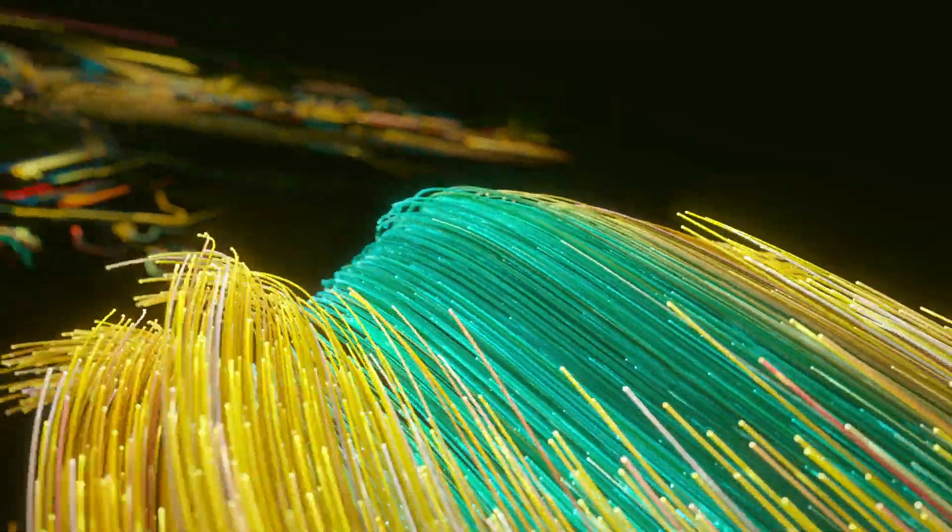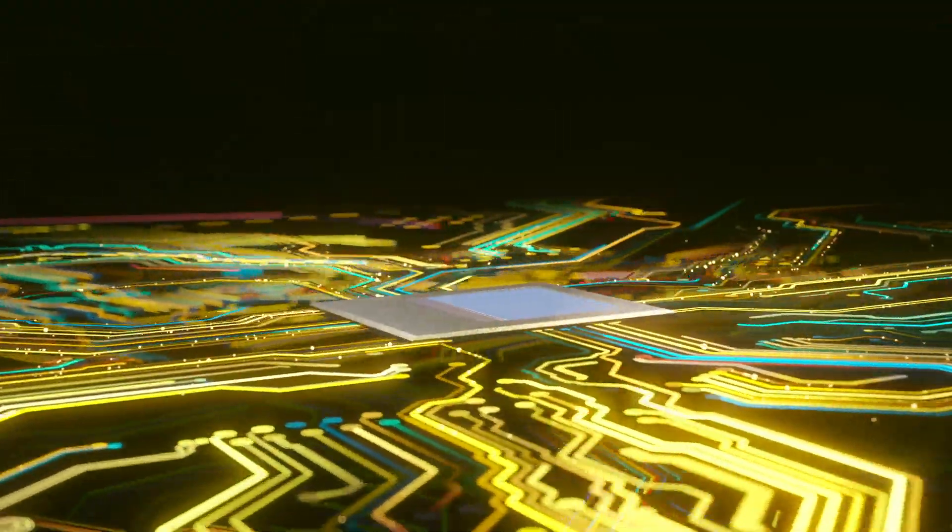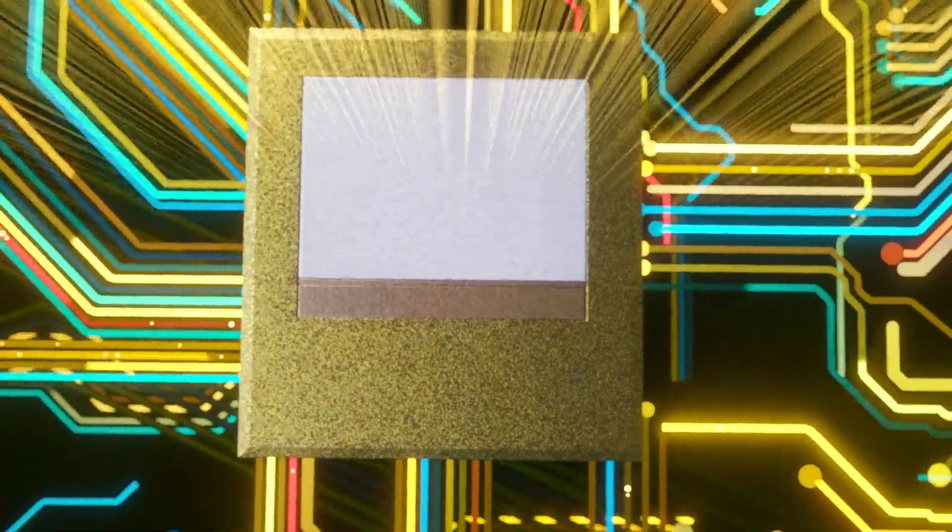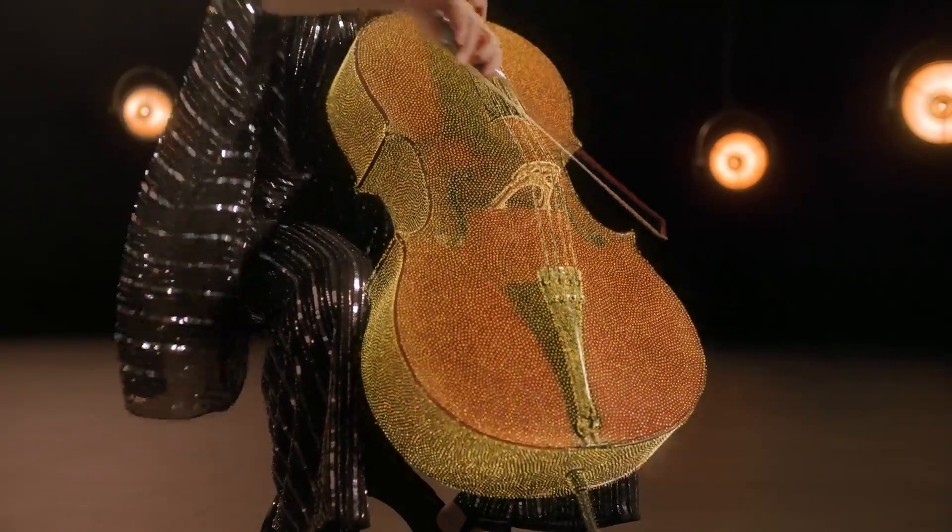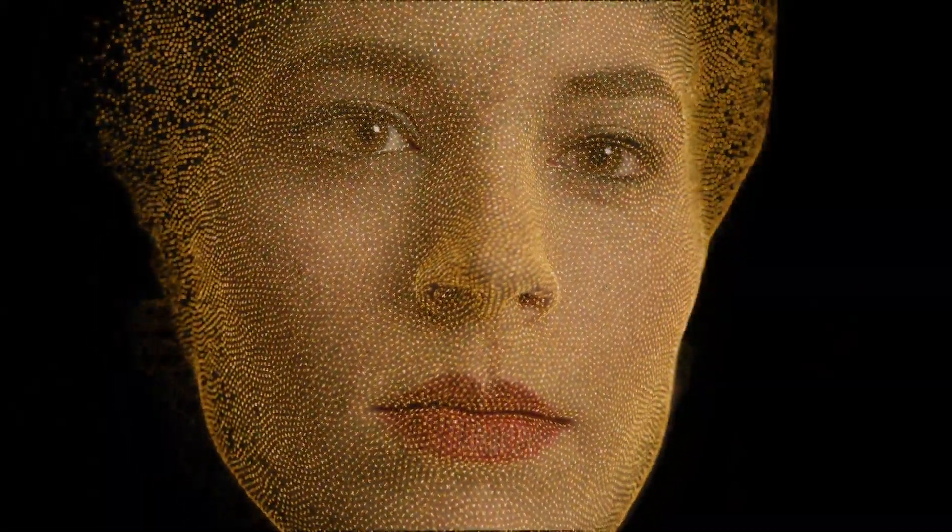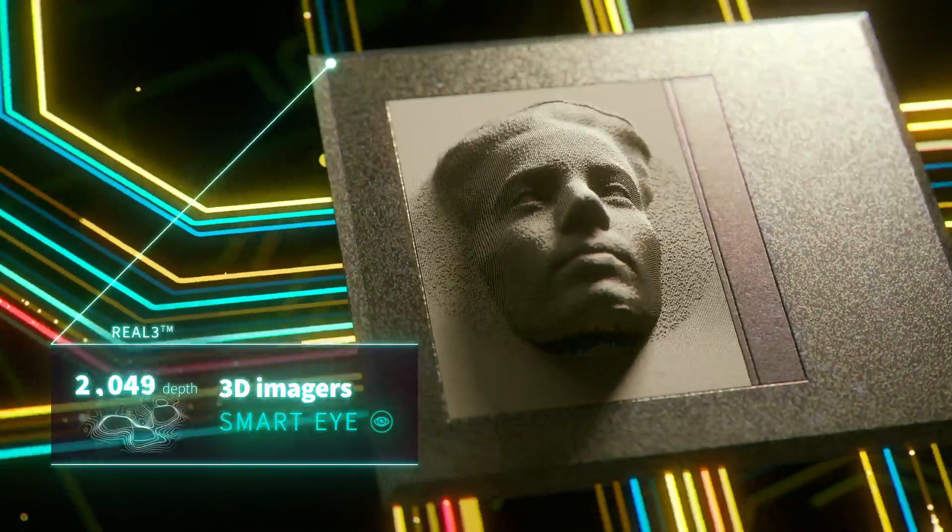Similar to our eyes, the time-of-flight based 3D imager uses the time of the light flying to create a 3D map of objects, rooms and people in real time, giving eyes to things for face authentication and much more.